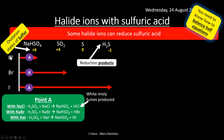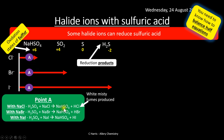Bromide and iodide ions are more powerful reducing agents and can reduce sulfuric acid further. At point B, with sodium bromide: Br⁻ is oxidized to Br₂, and sulfur in H₂SO₄ is reduced from +6 to +4 in SO₂. Combining the half equations gives the overall ionic equation: sulfuric acid reacting with Br⁻ forms Br₂, SO₂, and water.